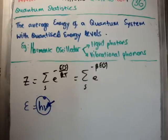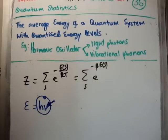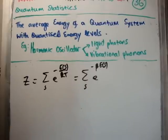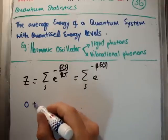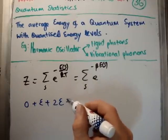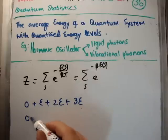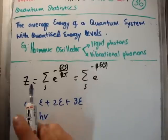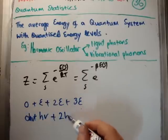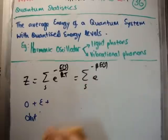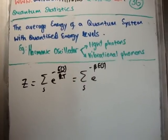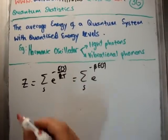Because Einstein used only one frequency he got an approximate answer; later Debye came along and used a range of frequencies, giving a better model for the heat capacity of a solid. The quantized energy levels we use here are: E₀ = 0, ε, 2ε, 3ε, and so on — or equivalently 0, hν, 2hν, 3hν — where the quantum of energy is epsilon or hν.